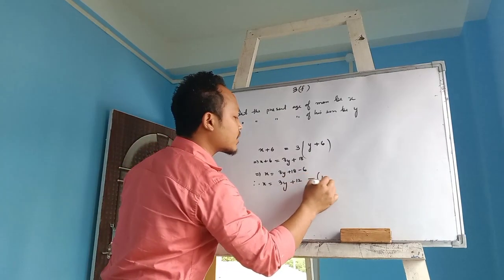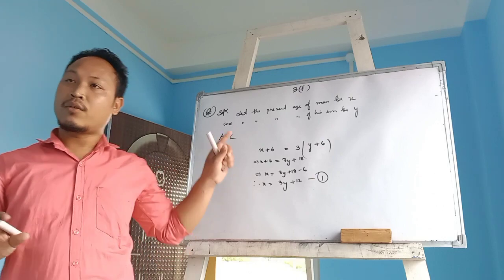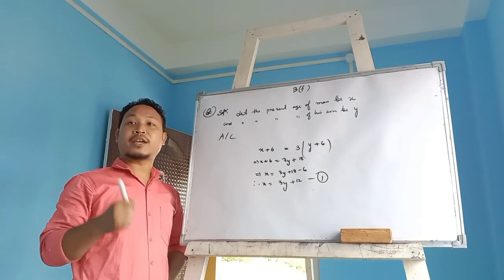I got the value of x is 3y plus 12. That is the first equation. Second equation: 3 years ago.